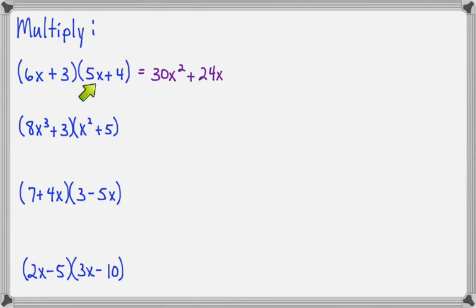Inner times inner is 3 times 5X, which is 15X. And last times last is 3 times 4, which is 12. Now if you look at the two middle terms, 24X plus 15X will make 39X. So we'll write our final answer as 30X squared plus 39X plus 12.